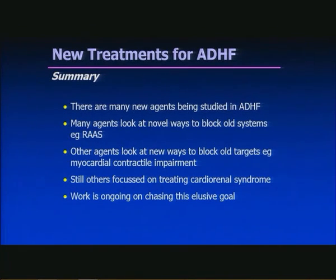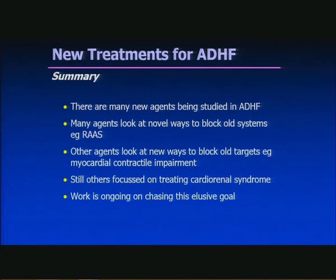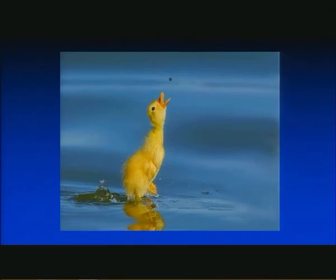In summary, there are many new agents being studied in acute decompensated heart failure. Many agents look at novel ways to block old systems, such as the renin-angiotensin-aldosterone system. Others look at new ways to address old targets, such as myocardial contractile impairment. Still others are focused on treating the cardiorenal syndrome, and work is ongoing in chasing this elusive goal. Thank you.